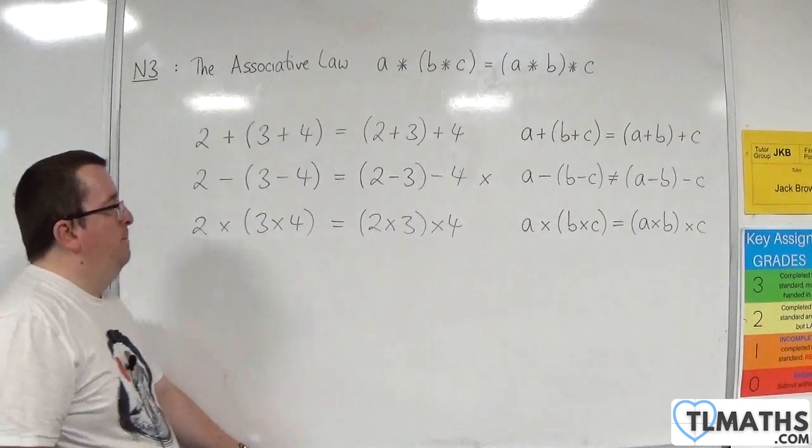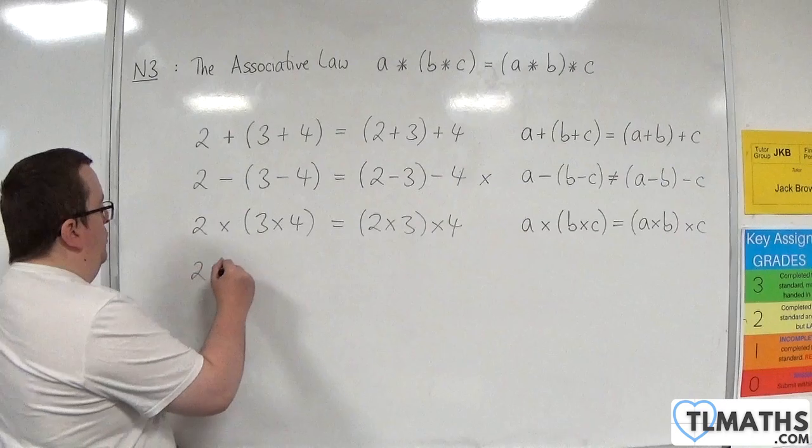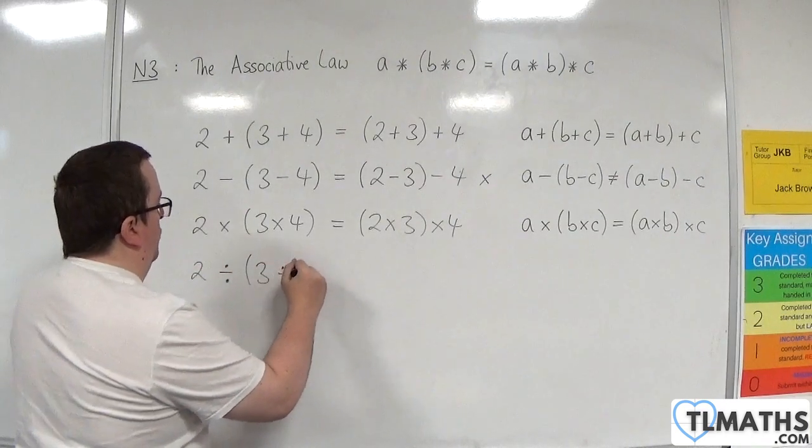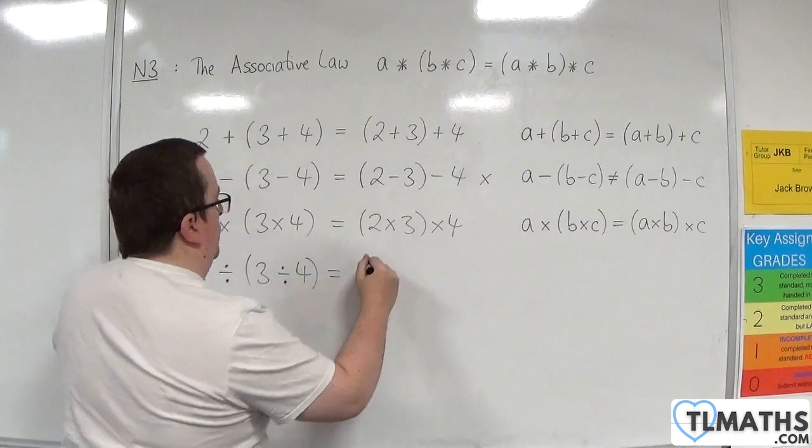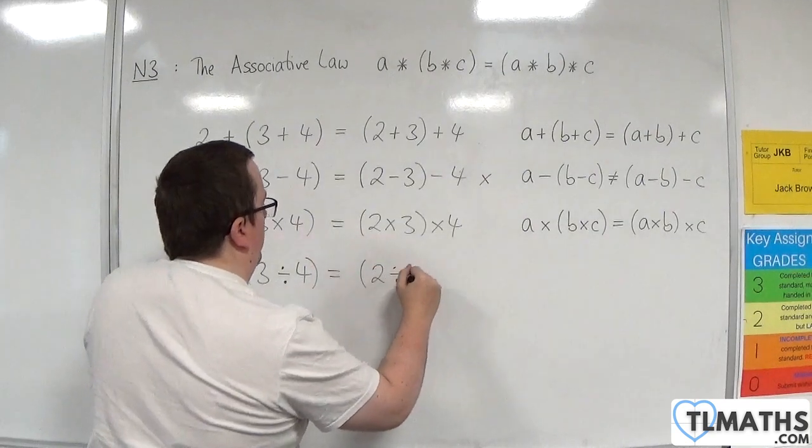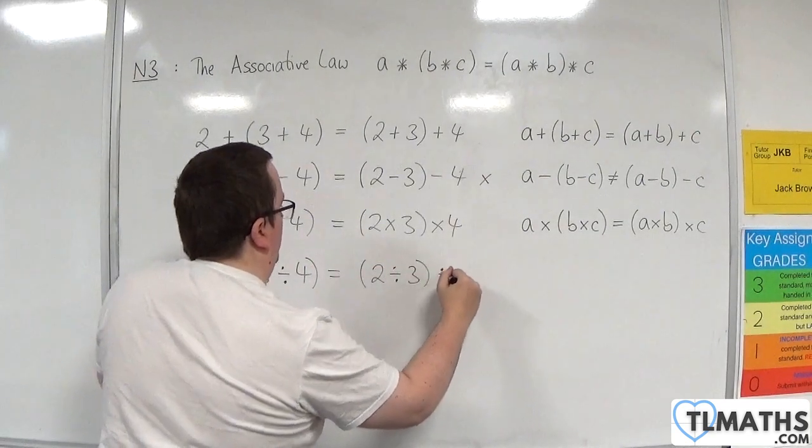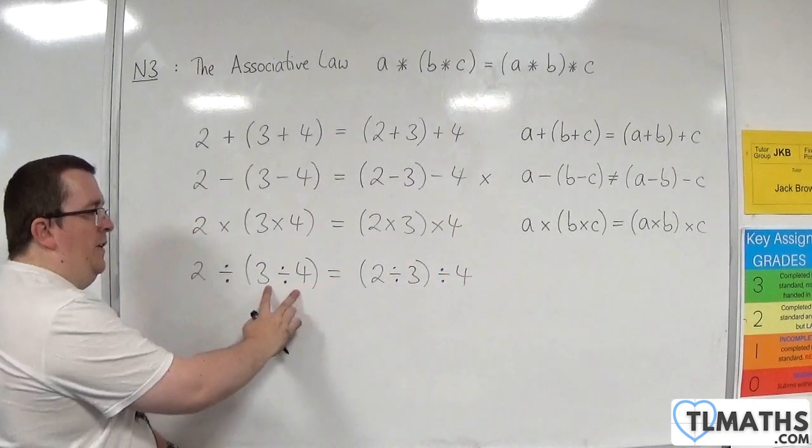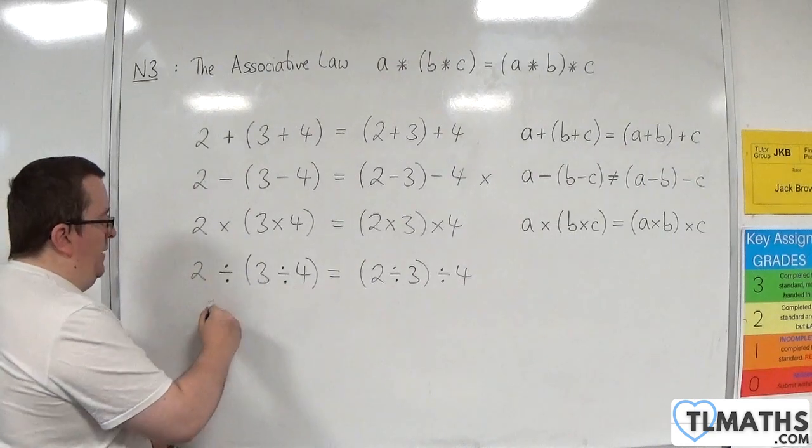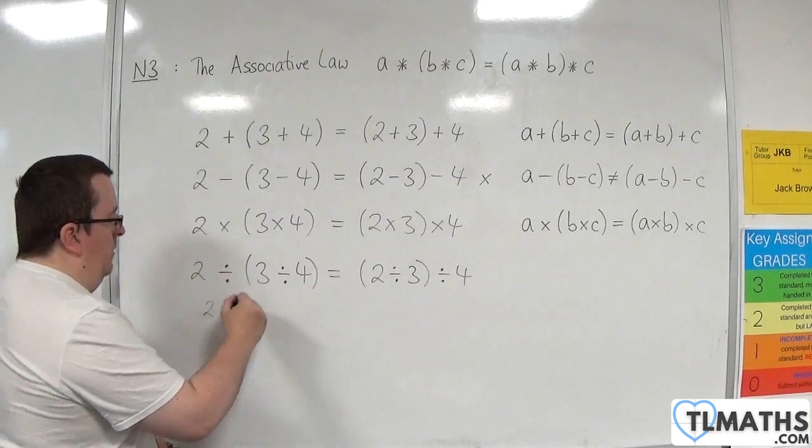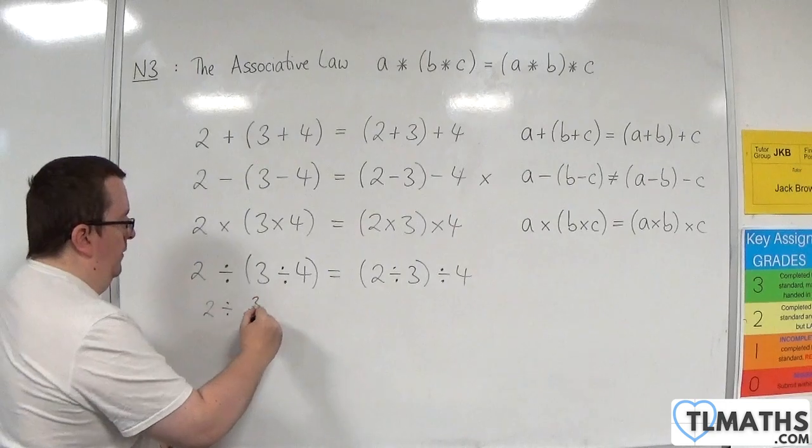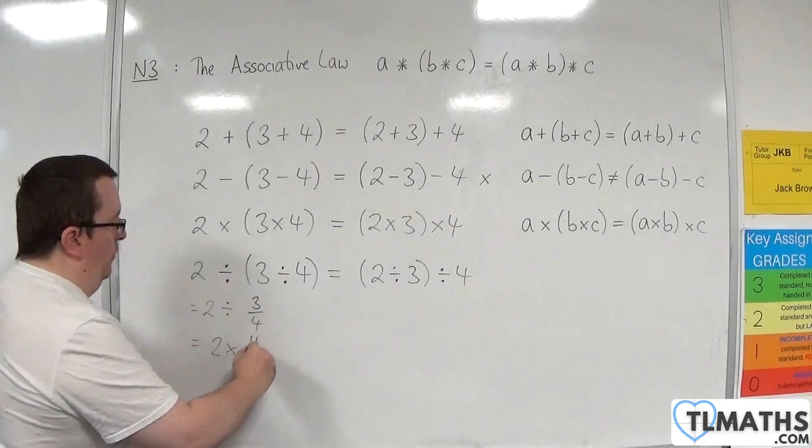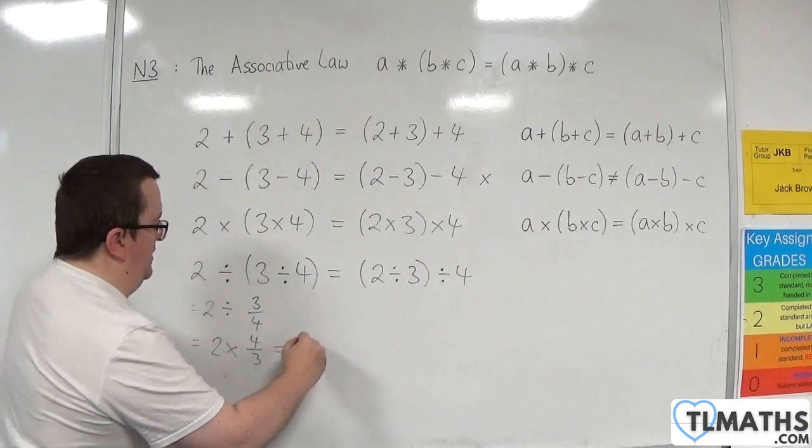What about division? 2 divided by 3 divided by 4 is equal to 2 divided by 3 divided by 4. Well, 3 divided by 4 is 3 quarters. So here we're doing 2 divided by 3 quarters. Which is the same as 2 times 4 thirds, which is 8 thirds.